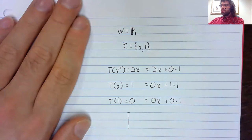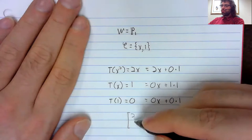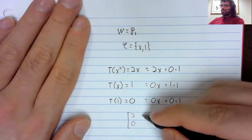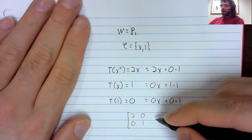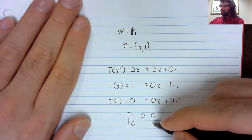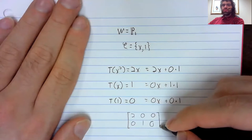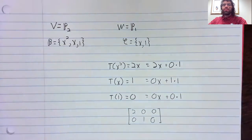So the coordinate vectors are two, zero, zero, one, and zero, zero.